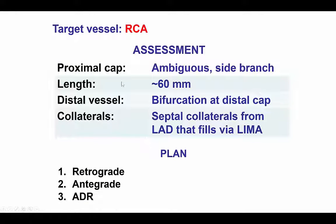In summary, we had a mid-RCA CTO with an ambiguous proximal cap, long length of about 60 mm, a bifurcation on the distal cap, and septal collaterals from the LAD, which in turn filled via the LIMA.